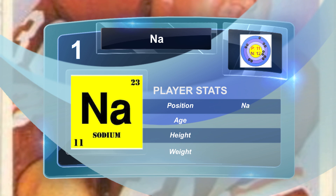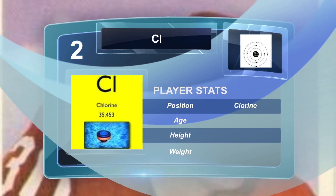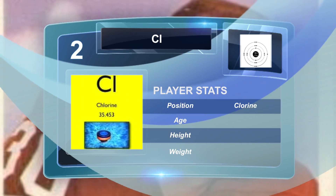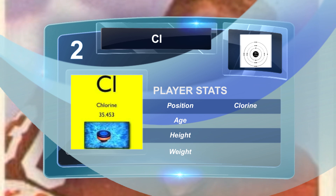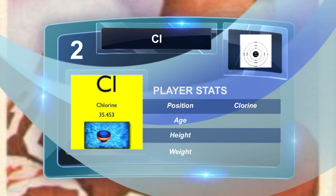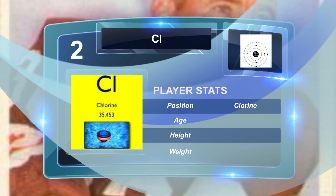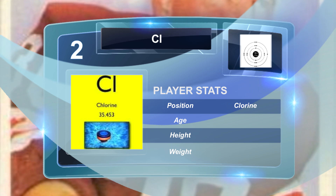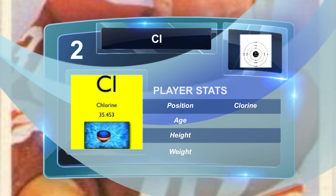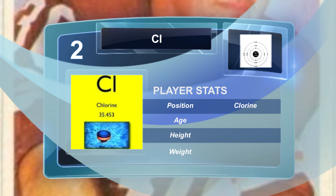Sodium's first ionization energy requires 496, and its second requires 4560. Chlorine: atomic number 17, electron configuration 1s2, 2s2 2p6, 3s2 3p5. Electronegativity 3.16. Ionization energy 1256 for the first, 2295 for the second. And it's definitely in the halogen family, Group 17. Clean stuff.